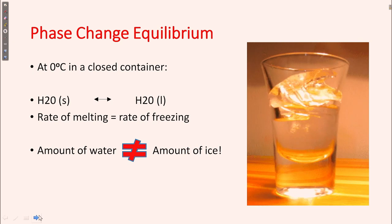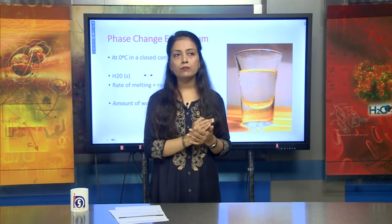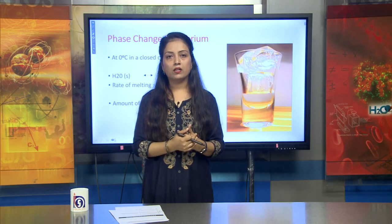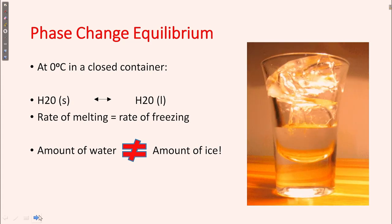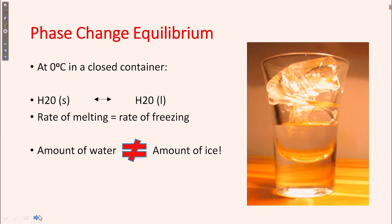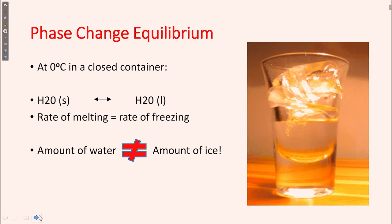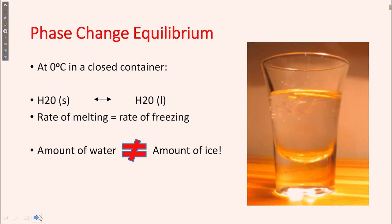Now, phase change equilibrium: dynamic equilibrium is also known as phase change equilibrium, but dynamic equilibrium requires a closed system. At 0°C in a closed container, solid water (ice) is converted into liquid water, and liquid water can also be converted back into ice. The rate of melting is equal to the rate of freezing. Note that the amount of water is not necessarily equal to the amount of ice.